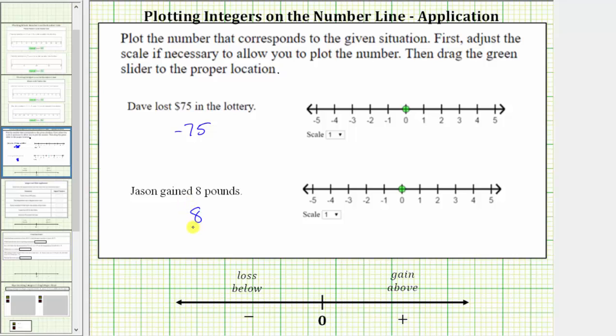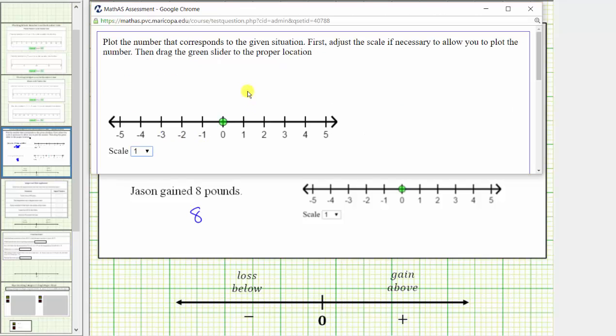And now we need to plot positive eight on the number line. Positive eight is located eight units to the right of zero. Notice using the default setting, positive eight is not on the number line. We need to change the scale. Using the drop-down menu, let's change the scale to twos.